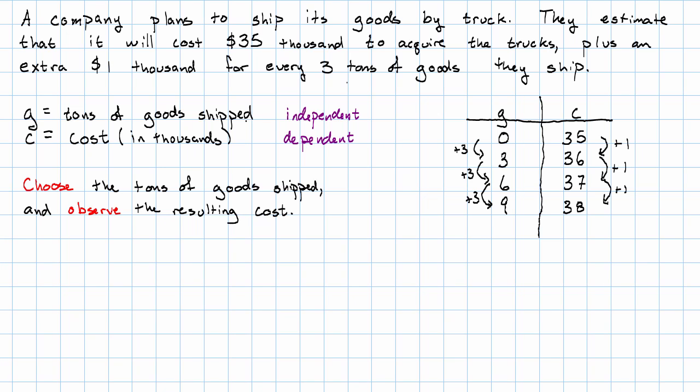Now obviously, in this story, if we wanted to find out how much it would cost them to ship, say, 27,000 tons of goods, we probably wouldn't want to use this continuing the table method.